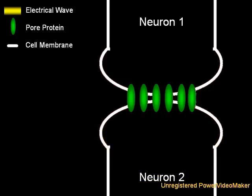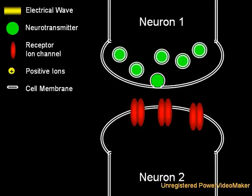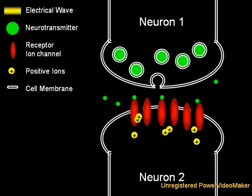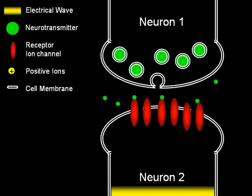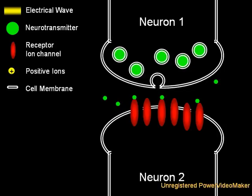The other type of synapse, called a chemical synapse, is a bit more complex. Here, the electrical wave in one neuron causes that cell to release a chemical, called a neurotransmitter. That chemical then binds to receptors on a nearby neuron. When bound, those receptors open their ion channels, starting a new electrical wave.